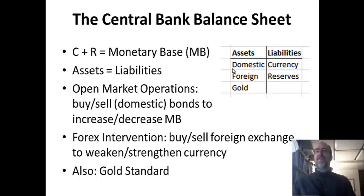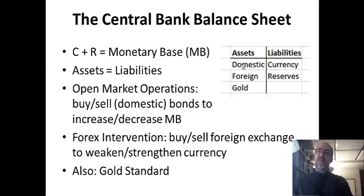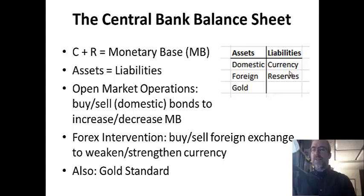In open market operations, if the Fed buys domestic assets — buys bonds — they expand their balance sheet, holding more domestic assets bought from the public. When you buy something, you give people money. The Fed could be issuing currency by giving the public money. They buy bonds, put money in the system to pay for it. If they paid cash, the amount of currency goes up; if they put it into reserves, the reserve side goes up. Adding $100 of domestic bonds means $100 of currency or reserves goes up. Selling bonds is how the Fed reduces the money supply — buying bonds increases it, selling bonds reduces it.